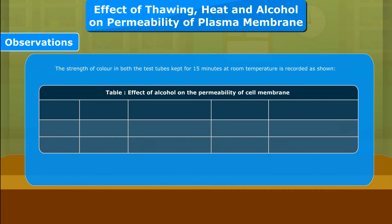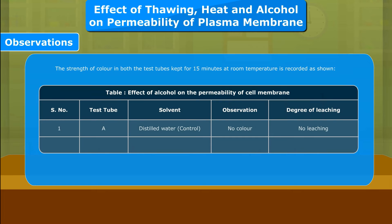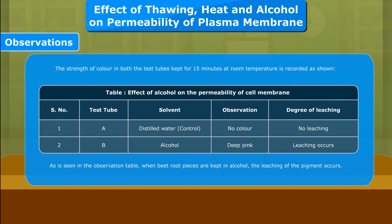Table — Effect of Alcohol on the Permeability of Cell Membrane. Serial Number 1: Test tube A, Solvent — Distilled water (Control), Observation — No color, Degree of Leaching — No leaching. Serial Number 2: Test tube B, Solvent — Alcohol, Observation — Deep pink, Degree of Leaching — Leaching occurs.